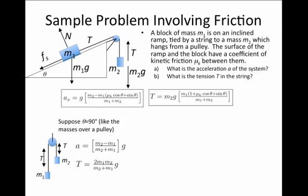we get M2 minus M1 over M2 plus M1 times g.